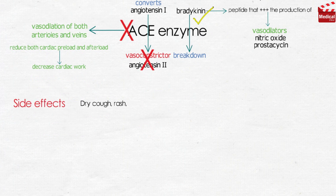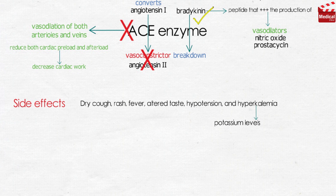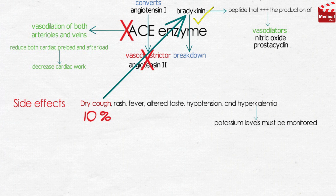Common side effects include dry cough, rash, fever, altered taste, hypotension, and hyperkalemia, so potassium levels must be monitored during the use of ACE inhibitors. The dry cough occurs in up to 10% of patients; it is thought to be due to increased levels of bradykinin and substance P in the pulmonary tree, and resolves within a few days of discontinuation.